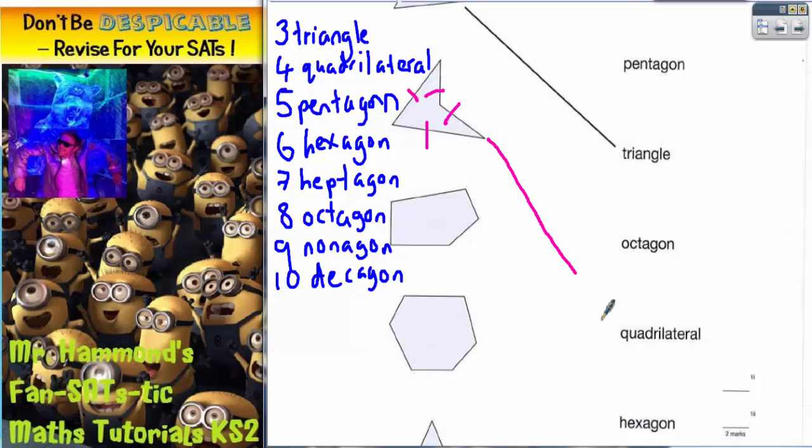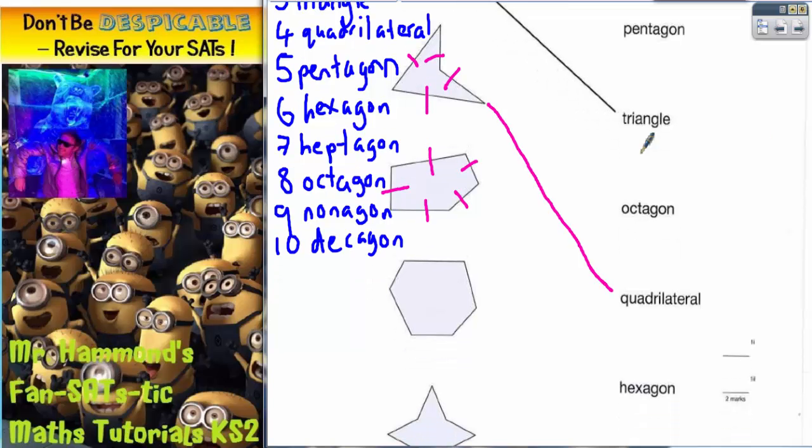Next shape has got one, two, three, four, five sides. Any five-sided shape is called a pentagon, so this shape gets joined to pentagon.